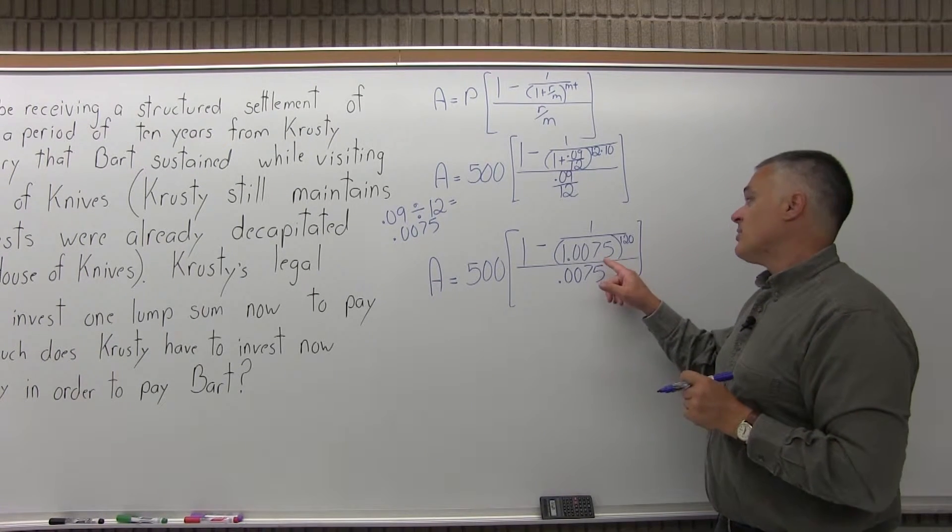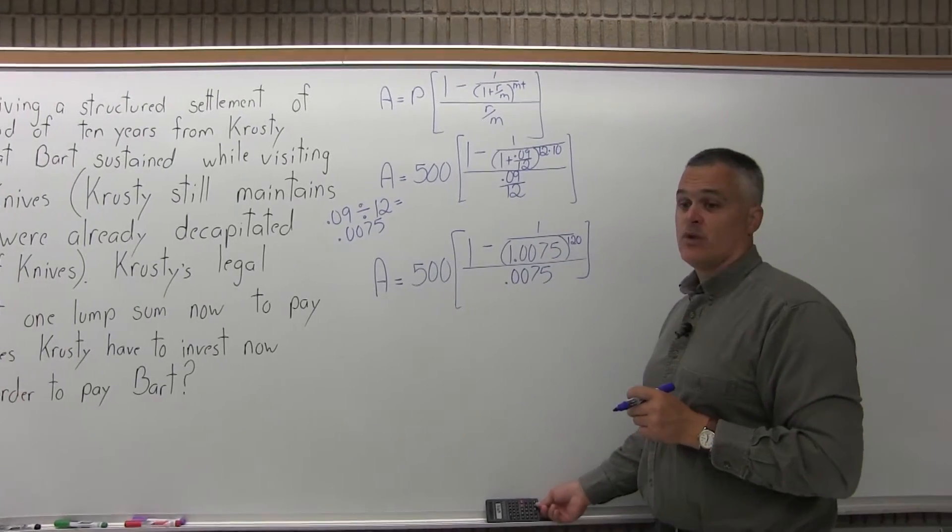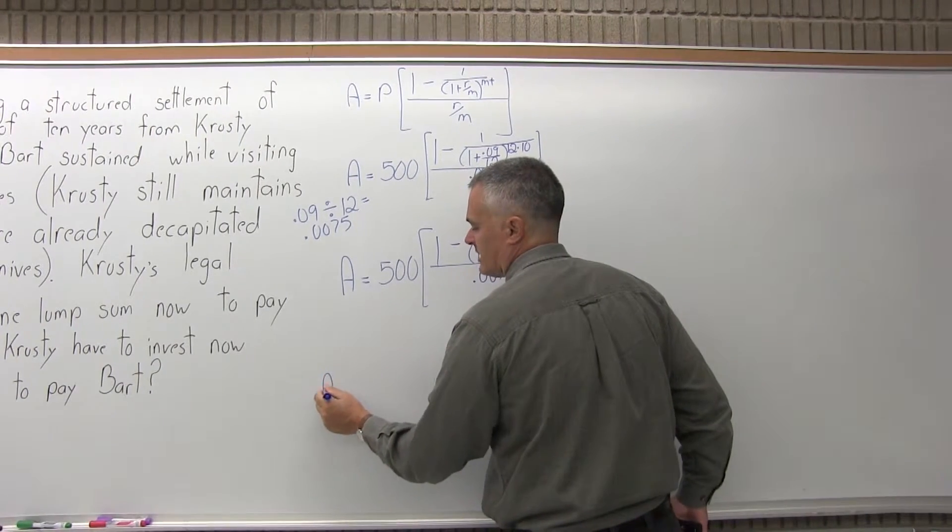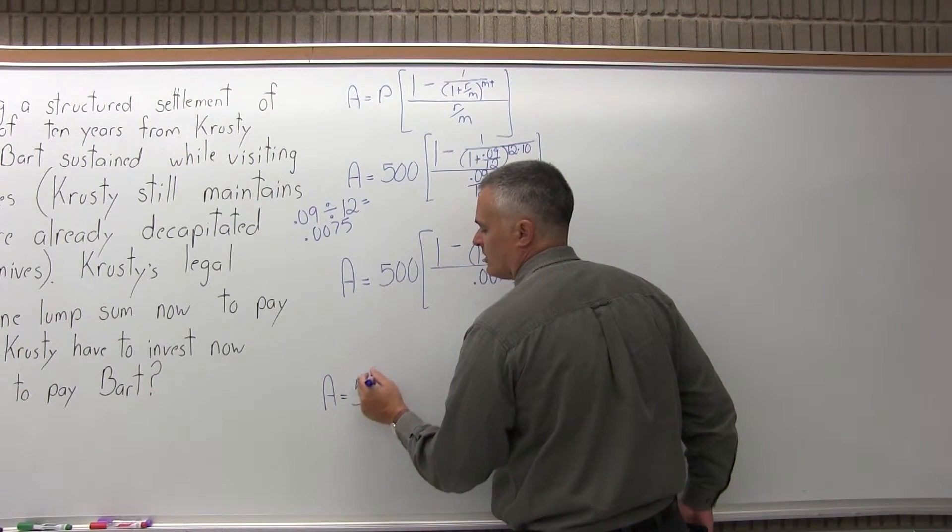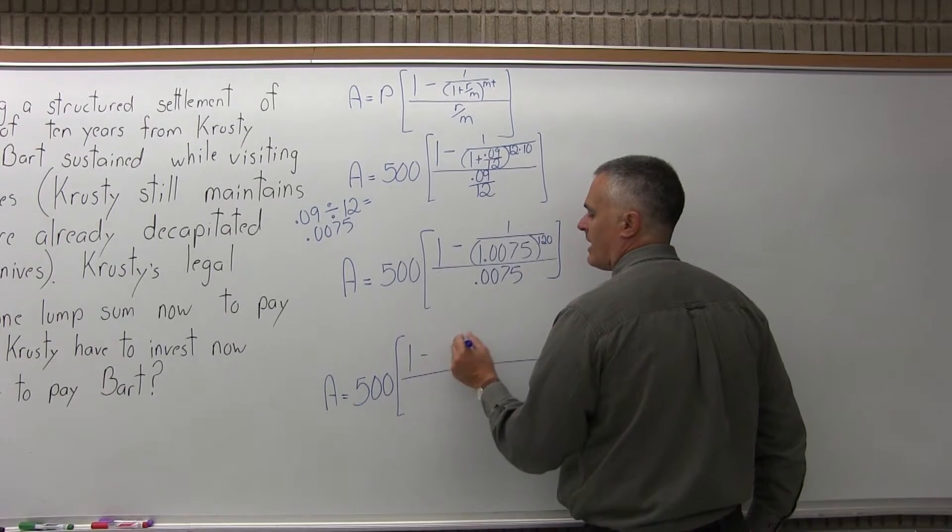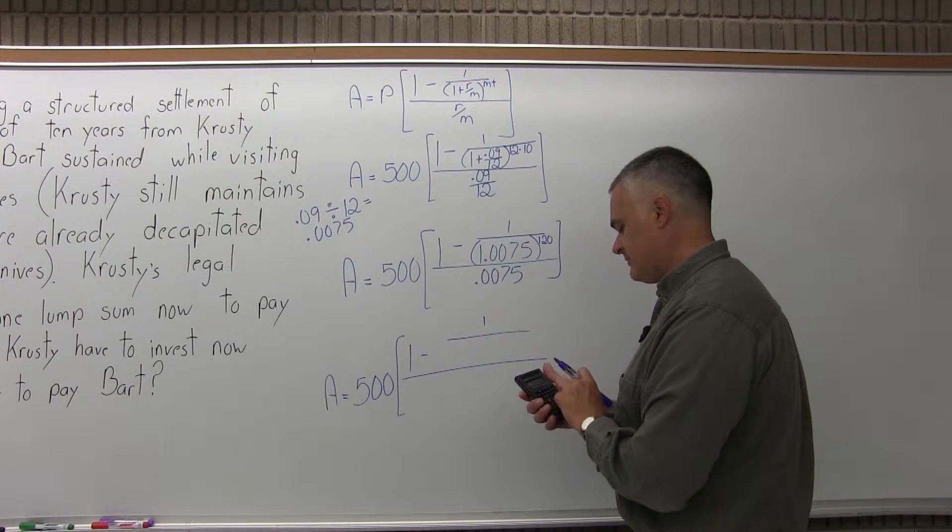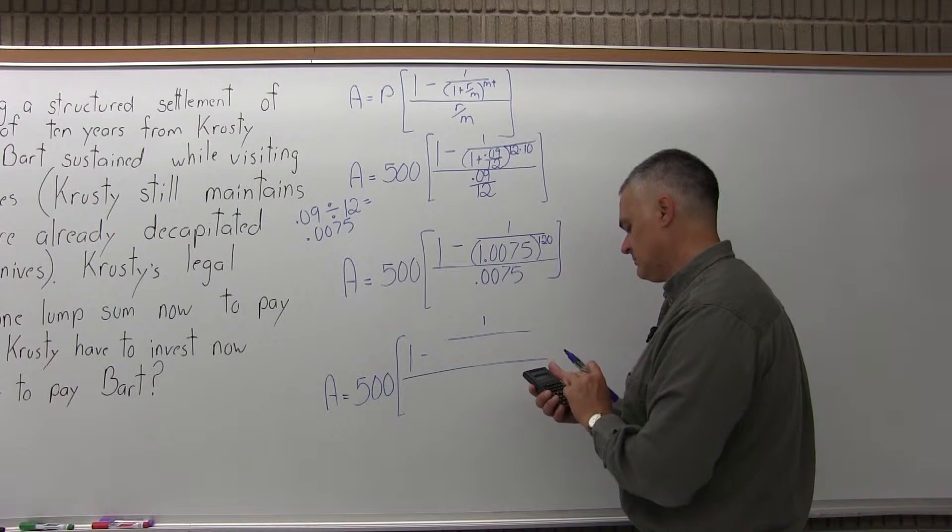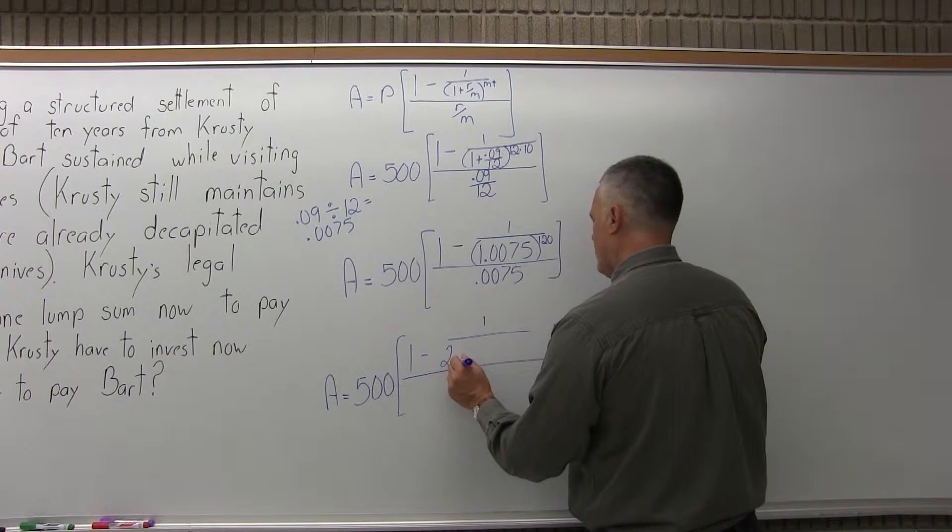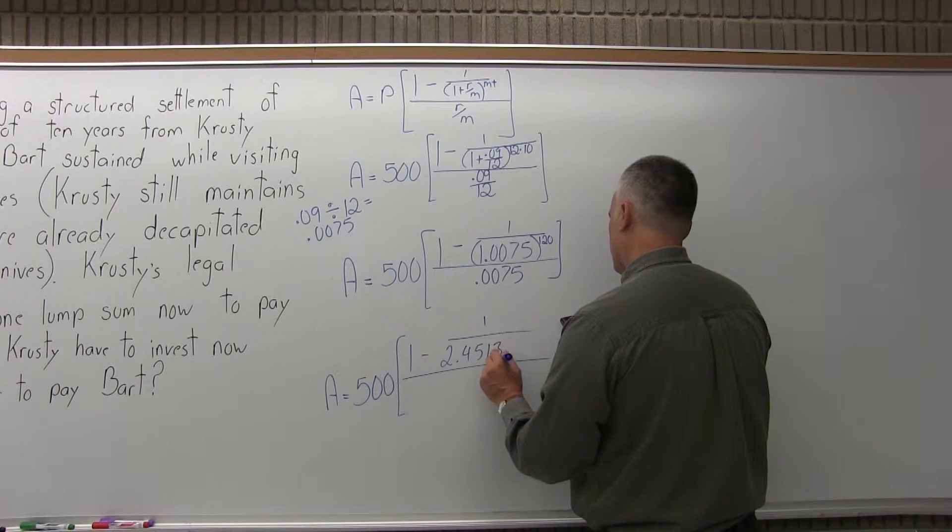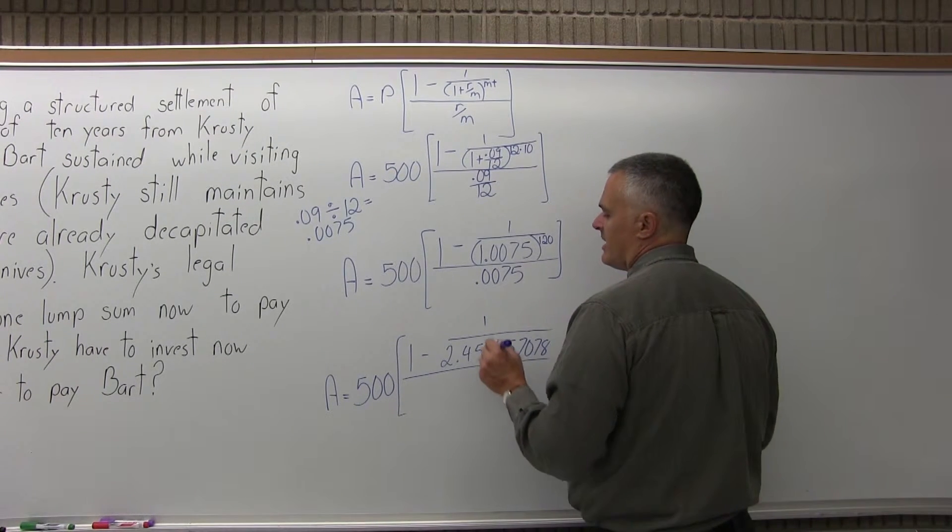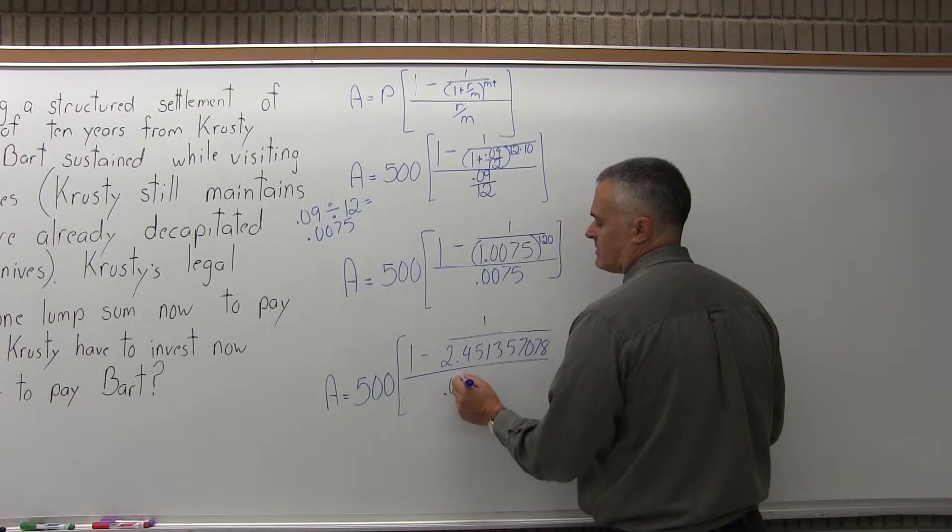Now, I will do the exponent, 1.0075 to the 120th power, and see what I get for that. And then the rest of the formula is going to just get dragged along. So the next step is going to be A equals 500 times the brackets. The numerator of the brackets, I'll have 1 minus 1 over 2.451357078. And then in the denominator of the brackets, I still have .0075.